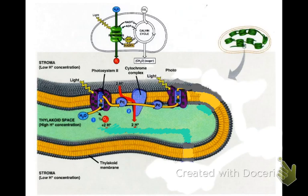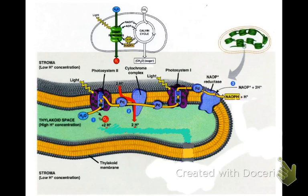With light, Photosystem I excites the electron again and passes it to the next electron acceptor, which is ferredoxin. Ferredoxin will pass its electron to NADP+ reductase, which is an enzyme able to reduce NADP+ to NADPH. That NADP+ will only carry one of the two hydrogens, but it does take two electrons, which is why it's normally shown as NADP+ plus a hydrogen.